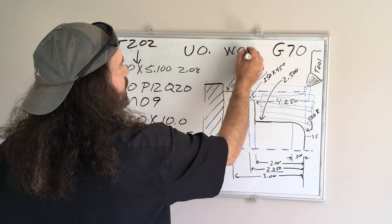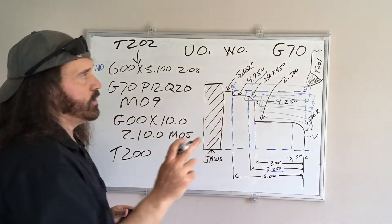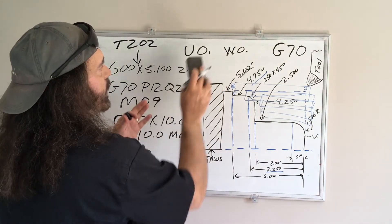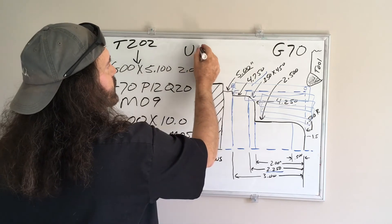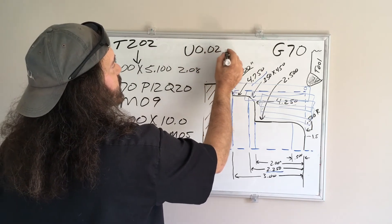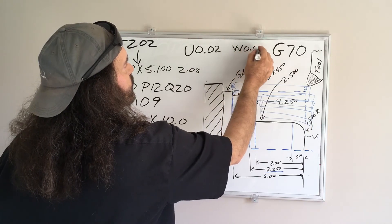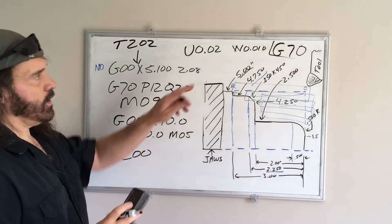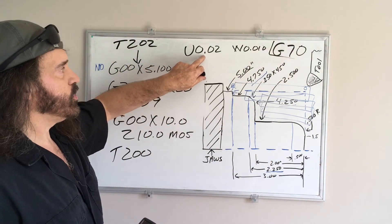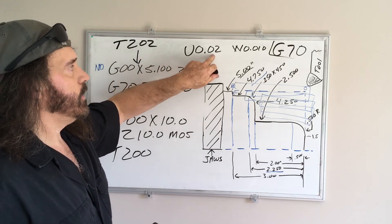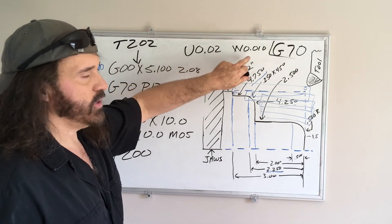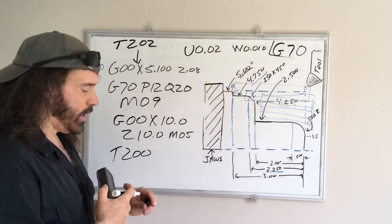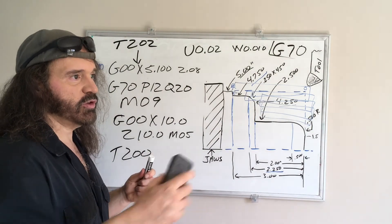In the previous video I left the U code at zero and the W code at zero. So in order to have the finish pass, you have to leave some material. So what you'd have to do, say we leave 20 thousandths on the U and on the W we'll leave 10 thousandths. In your G71 line you can switch your U value to 20 thousandths to leave on your X dimension, and then on your Z dimensions you can leave 10 thousandths. So that way you've got some material to do a finish pass to clean up.